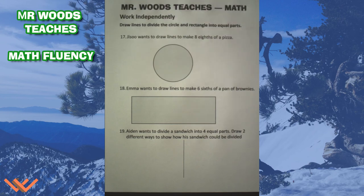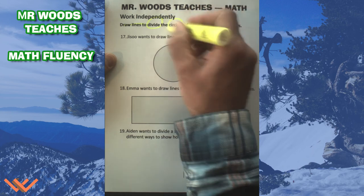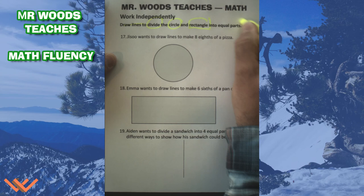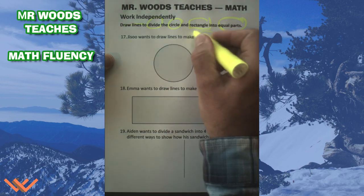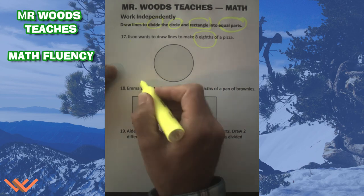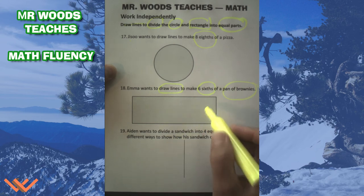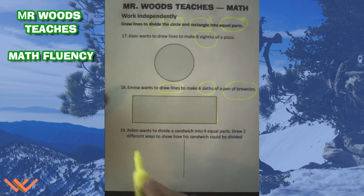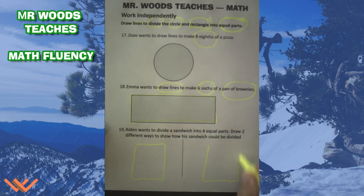This sheet is more practice. The directions say draw lines to divide the circle and rectangle into equal parts. Jisoo wants to draw lines to make eight eighths of a pizza. Emma wants to draw lines to make six sixths of a pan of brownies — so you need to draw those lines here. Aiden wants to divide a sandwich into four equal parts — draw two different ways to show how his sandwich could be divided.